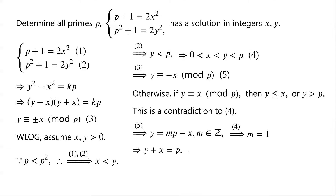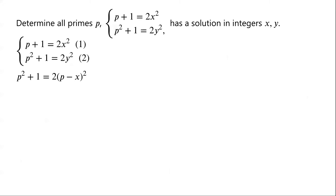So we have y plus x equals p, that is y equals p minus x. From equation 2 we know that p squared plus 1 equals 2y squared. Substituting y equals p minus x, we get p squared plus 1 equals 2(p minus x) squared, which expands to 2p squared minus 4px plus 2x squared. From equation 1 we know that 2x squared equals p plus 1.